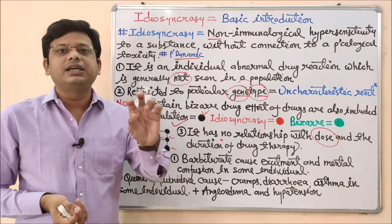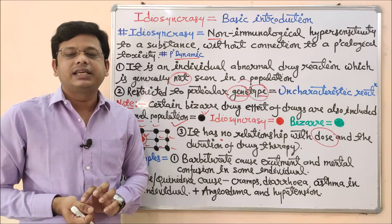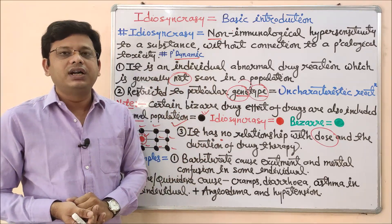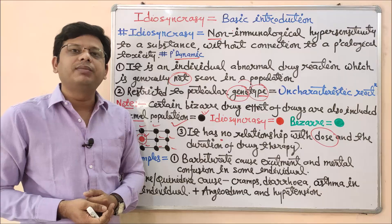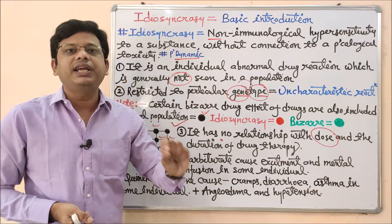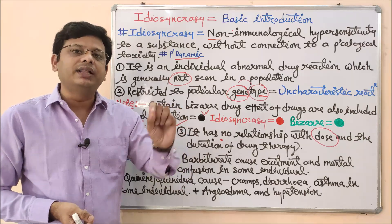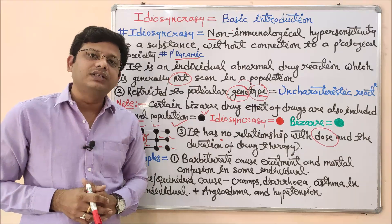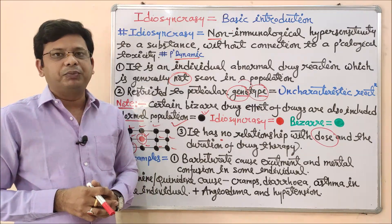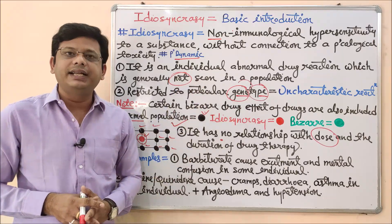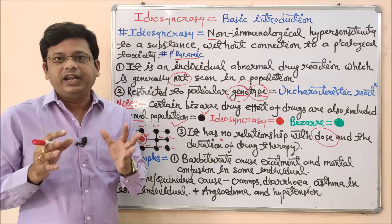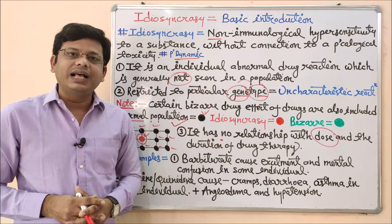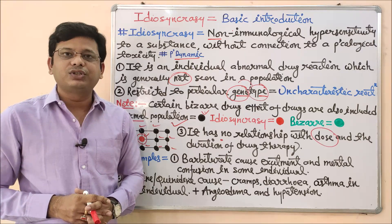In summary, an idiosyncratic reaction is a phenomenon where a rare individual, apart from the general population, responds to a drug in a different way and produces some kind of unwanted reaction that is totally independent of the pharmacological profile, dose, and duration of drug therapy. This is called an idiosyncratic reaction, and the process is known as idiosyncrasy. The reference for today's topic is KD Tripathi and literature from internet sources. Thank you for watching — please leave your feedback in the comment box.